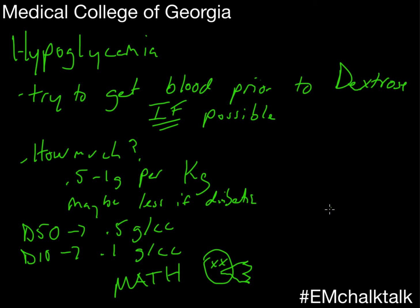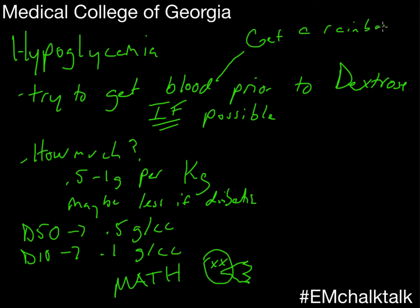Getting those extra tubes of blood helps out the other folks — they will always ask for something you didn't think of. An ammonia and a CNP are common things that are helpful, so just make sure you get more. Often it's going to turn out to be something metabolic if a kid comes in out of the blue hypoglycemic. Growth hormone is always something endocrinologists look for, and you don't want to be in a situation where you've mucked up the water and they're having a very difficult time sorting out why this kid was hypoglycemic to begin with.